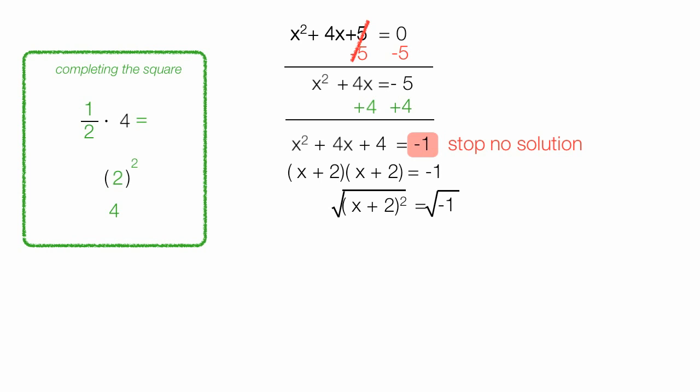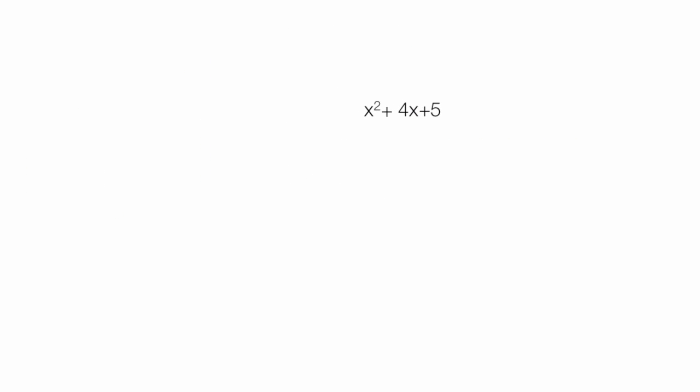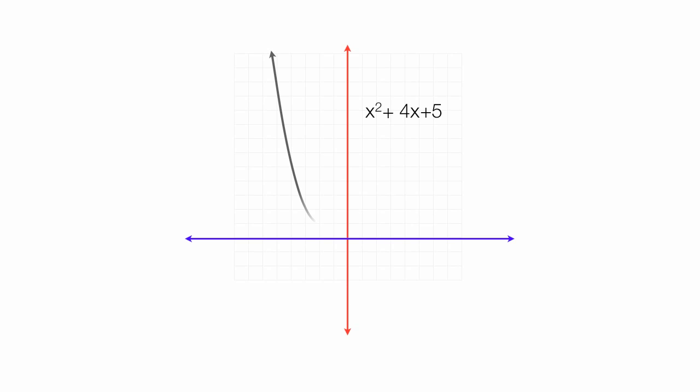If I graph this equation, if I graph x squared plus 4x plus 5, the graph looks like this. Let me draw in the x and y. Notice it never touches or crosses the x-axis. That's what it means. There's no solution.